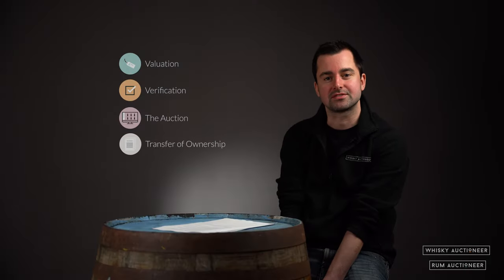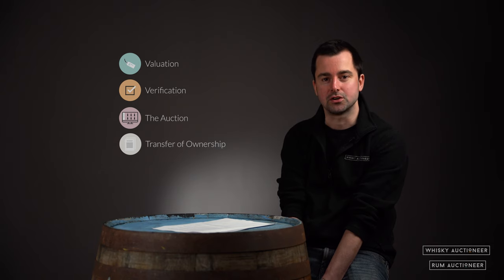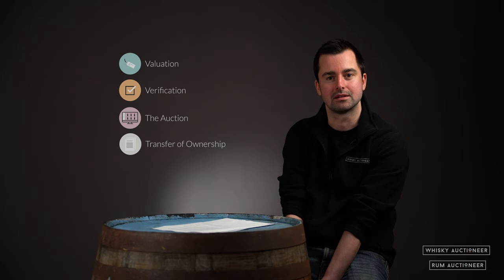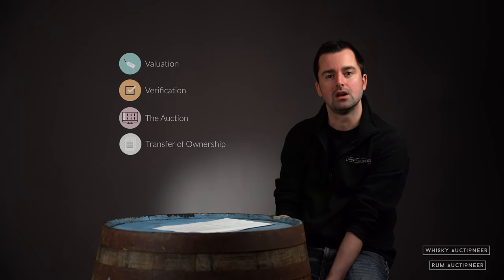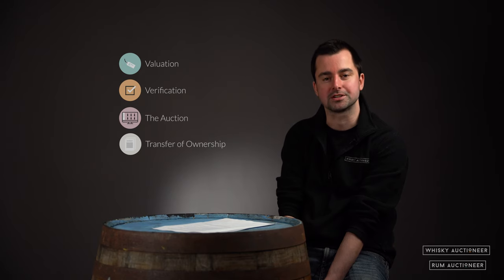The fourth step is transfer of ownership, and this happens after the auction and once Whisky and Rum Auctioneer have collected payment from the buyer. We will create a legal document known as a delivery order which needs to be signed by the seller of the cask as well as the buyer. Once this has been completed and all necessary admin fees have been paid, we will then pass this on to the distillery or the warehouse to complete the transfer of ownership.